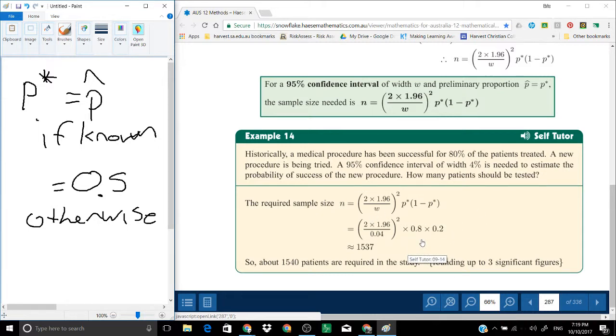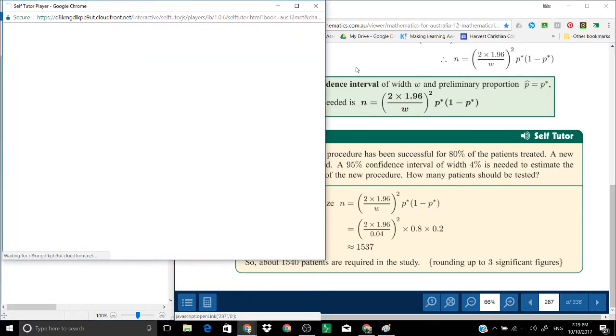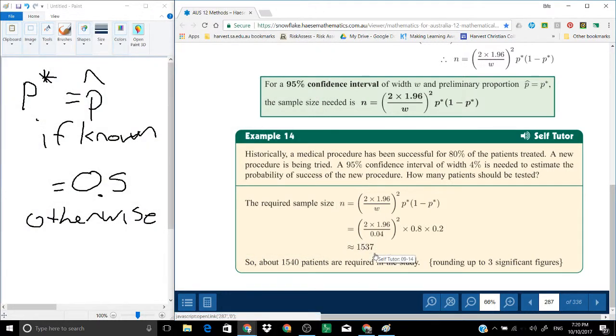P star equals p hat if p hat is known, and equals 0.5 otherwise. That actually makes it a very interesting thing for calculating n. Let's see if we can find an example here. Historically, a medical procedure has been accessible for 80% of patients treated. A new procedure has been tried. A 95% confidence interval of width 4% is needed to estimate the probability of success of the new procedure. How many patients should be tested?